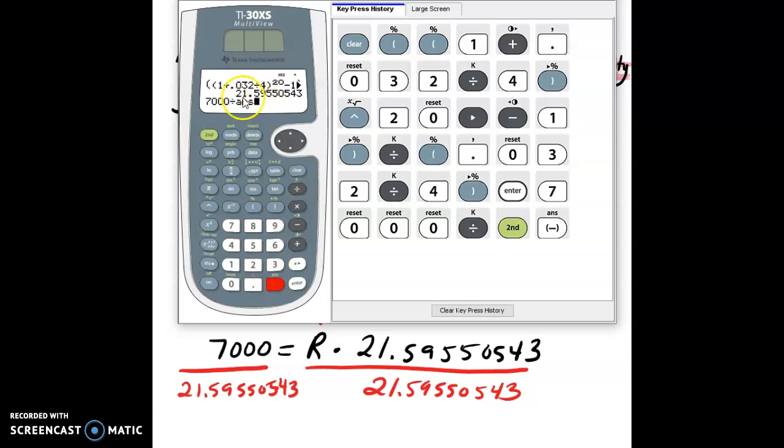and that will pull down the prior answer, just one prior. So if that's your previous answer, you can hit 2nd, this negative sign, and it will pull that down. So you don't have to retype it and possibly make an error when you're retyping it. So hit enter, and I get this amount.